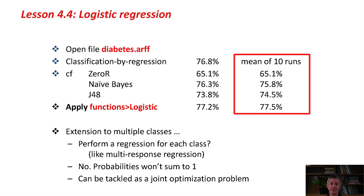You can extend the idea to multiple classes. When we did this in the previous lesson, we performed a regression for each class, a multi-response regression. But that actually doesn't work well with logistic regression, because you need the probabilities to sum to one over the various different classes. That introduces more computational complexity and needs to be tackled as a joint optimization problem.